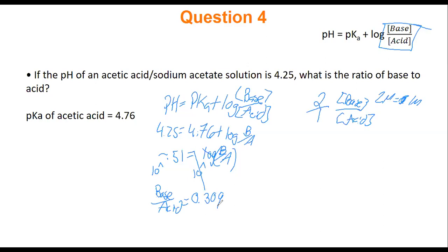If there are variables in a log, we can't touch them directly. The only way to get rid of a log is to take 10 to the power of each side. The power of 10 and log cancel each other out. So our fraction base divided by acid equals 10 to the power of negative 0.51, which is 0.309. Does this make sense? Our pKa is 4.76, so the buffer works from 3.76 to 5.76 — our pH of 4.25 is in that range. And since this number is less than one, we have more acid than base, so the pH should be lower than pKa. And it is.